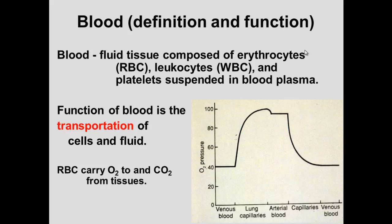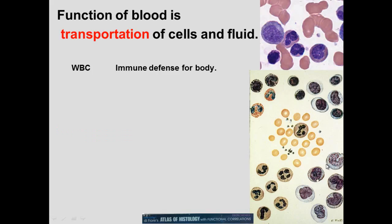Looking at the graph on the right, oxygen pressure is greater in blood right after the lungs — the lung picks it up, then through the capillaries oxygen tension goes down, cycling repeatedly. Carbon dioxide is released in the lungs. So the primary function of blood is transportation of cells and fluid.